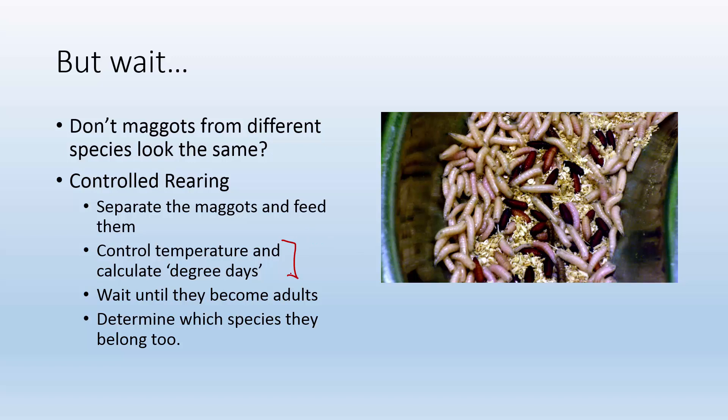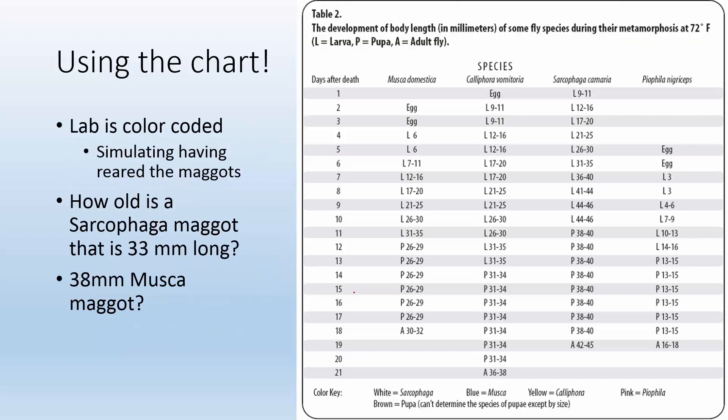We give them food and we can calculate the degree of days, basically how long does it take the maggot that we collected to become an adult. So you figure out that time and you can figure out well how old was the maggot then when we collected it. So once they become an adult you can look at the adult and figure out what species it is and then you can go, all right, well if it took 10 days to become an adult since we collected it, let's figure out how long it took the maggot to grow to that size when we collected it.